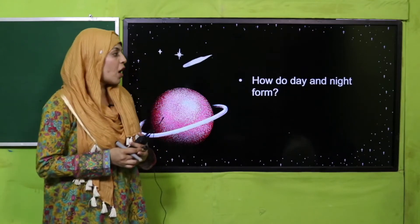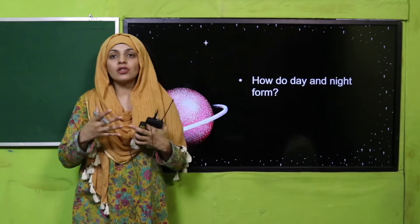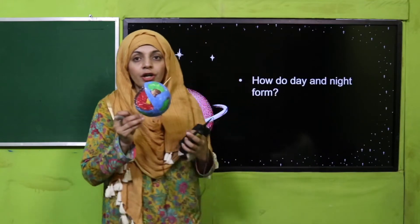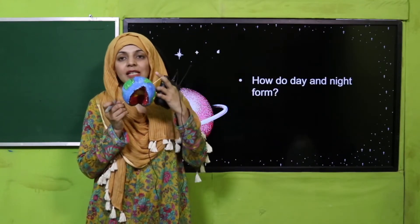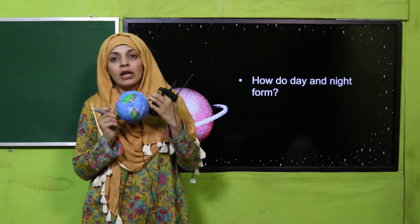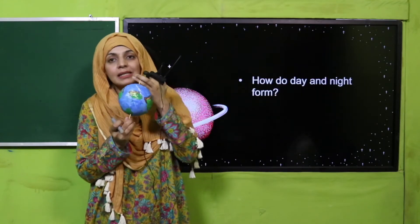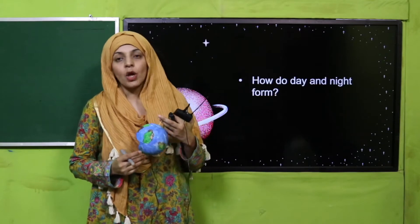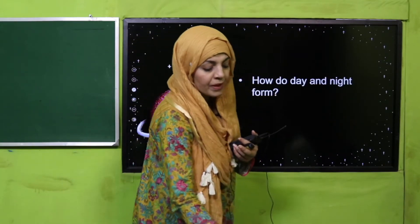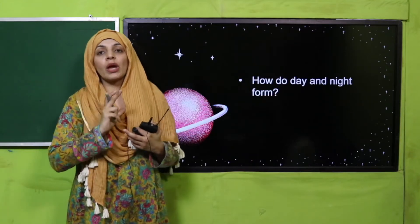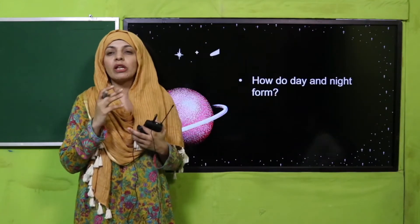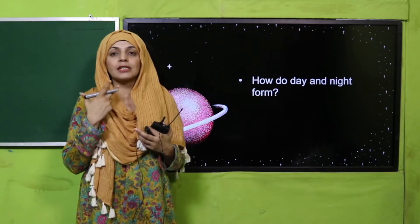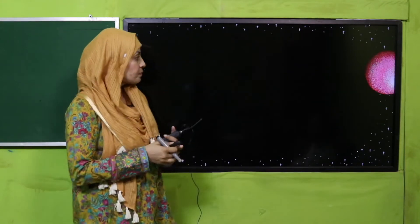So how do day and night form? They form because of the movement of Earth on its axis. The part which is facing the Sun has daytime, and the part which is opposite and not receiving sunlight has nighttime. This is how day and night form. Earth completes one rotation in approximately 23 hours 56 minutes - that is the exact time for one complete rotation on its axis.